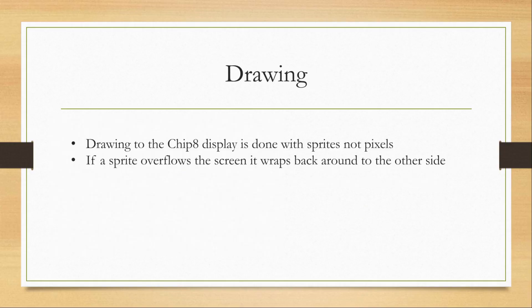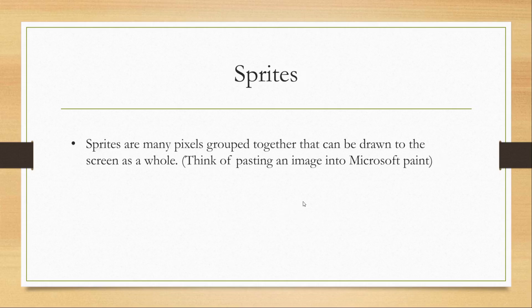Drawing to the Chip 8 display is done with sprites. When you draw a sprite to the display and it goes out of screen bounds, it wraps back around to the other side and starts drawing the out-of-bounds pixels from the start — think of Pac-Man going through one side of the screen and coming out the other. Sprites are many pixels grouped together that can be drawn to the screen as a whole, like copy and pasting an image into Microsoft Paint.